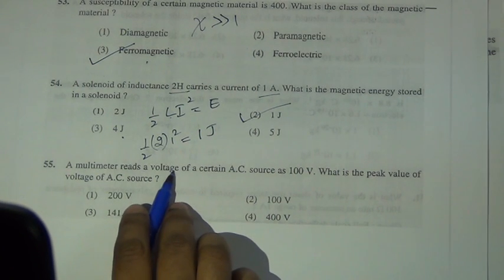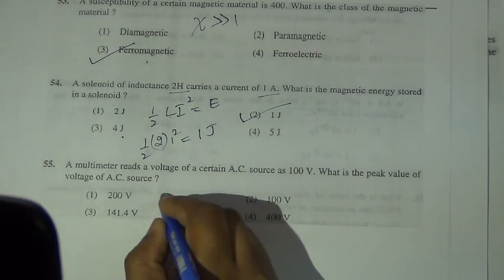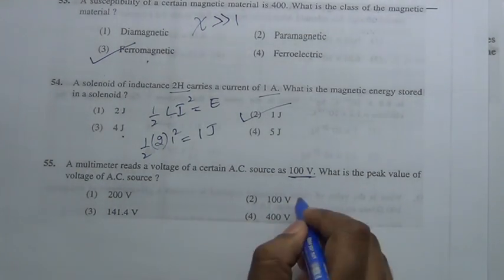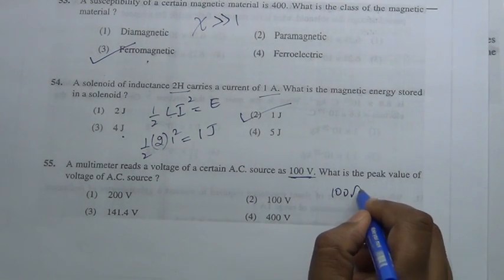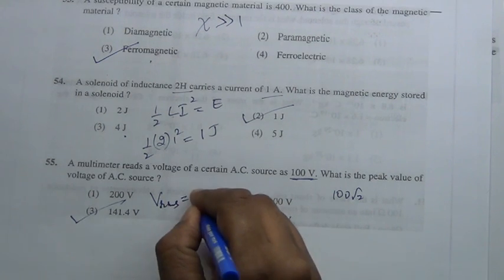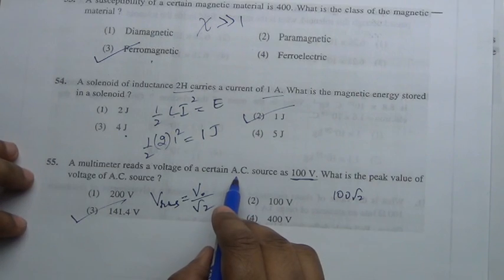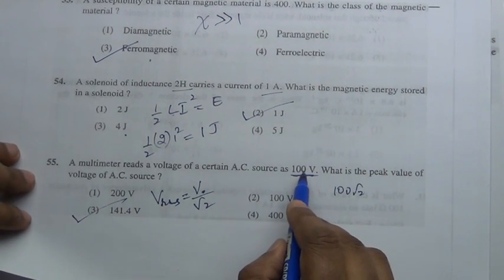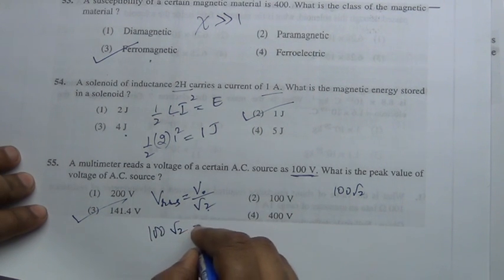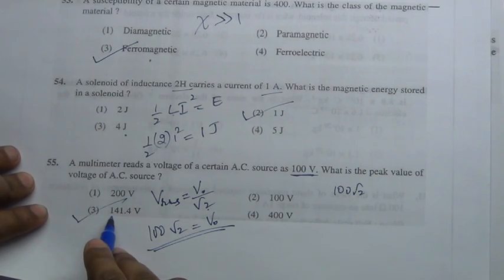A multimeter reads a voltage of 100 V for a certain AC source. What is the peak value of the AC voltage? Since V_rms = V₀/√2, the peak voltage V₀ = V_rms × √2 = 100√2 ≈ 141 V. In AC, any mentioned voltage or current is always the RMS value.